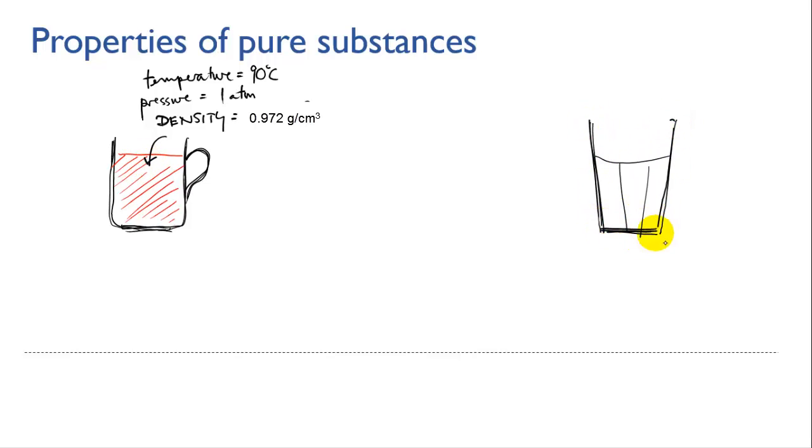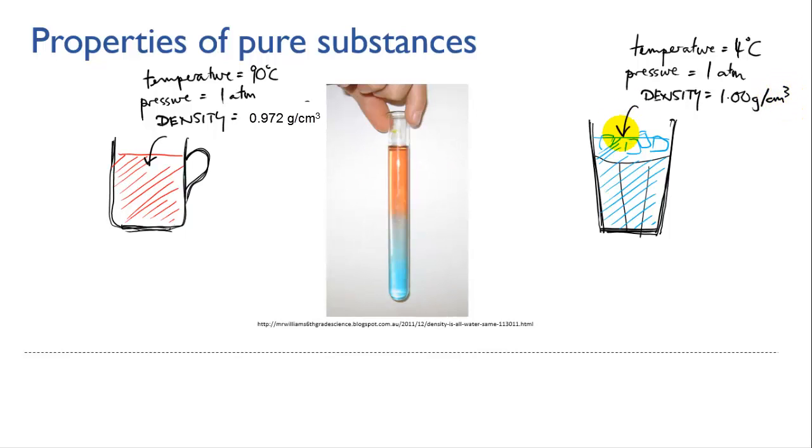If I now looked at a glass of iced water with a temperature of 4 degrees C straight from the fridge, and also at 1 atmosphere pressure, I'd find its density was 1 gram per centimetre cubed. The two containers hold the same pure substance, but because they're at different temperatures, their densities are different.